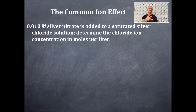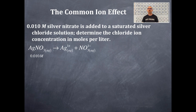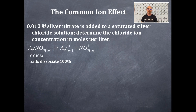Here's the equation: AgNO₃ (aqueous) with a unidirectional arrow yields Ag⁺ (aqueous) and NO₃⁻ (aqueous). This is balanced for both charge and mass. The problem states we have a 0.010 molar solution of silver nitrate. Since this is a salt and dissociates 100%, we can determine the concentrations of both products based on their mole ratios.